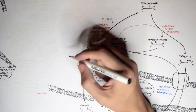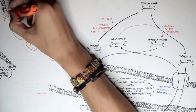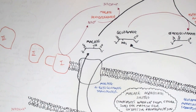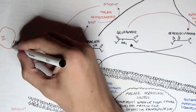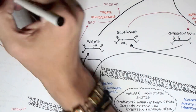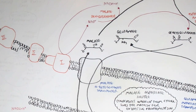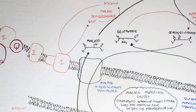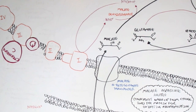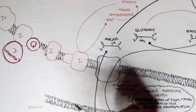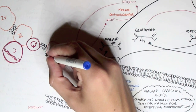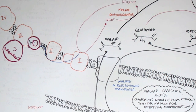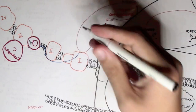To recap oxidative phosphorylation: we have complex 1, complex 2, complex 3, complex 4, and complex 5, which is ATP synthase. NADH is used in complex 1, where it is oxidized to NAD and electrons are obtained. Two mobile proteins are important: ubiquinone (designated Q), which is in the inner mitochondrial membrane, and cytochrome C, which is in the intermembrane space. NADH is oxidized to NAD through complex 1, and the electrons are given to ubiquinone, converting it to ubiquinol.